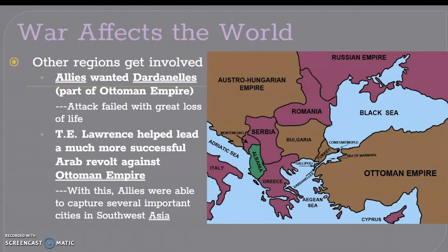As I mentioned earlier, it became the Great War because many regions of the world were involved. The Allies wanted the Dardanelles — this area between modern-day Turkey and the Ottoman Empire — and they fought a huge battle called the Battle of Gallipoli there. The attack failed with great loss of life. But T.E. Lawrence, who was actually a British archaeologist, helped lead a much more successful Arab revolt against the Ottoman Empire, allowing the Allies to capture several important cities in Southwest Asia.